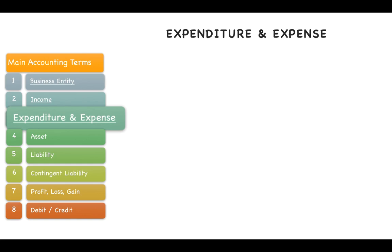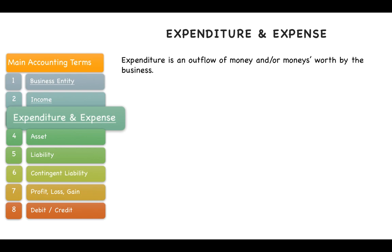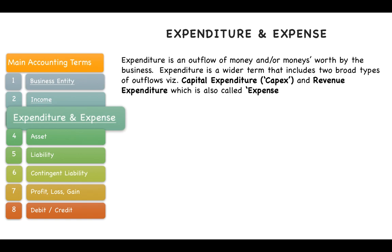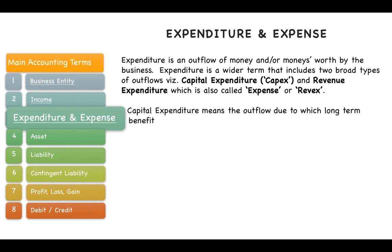Expenditure is an outflow of money or money's worth by a business. It is a wider term that includes two broad types of outflows: capital expenditure, also called capex, and revenue expenditure, also called revex or expense. Therefore, expenditure and expense are two different terms — expenditure is the wider one which covers expense.